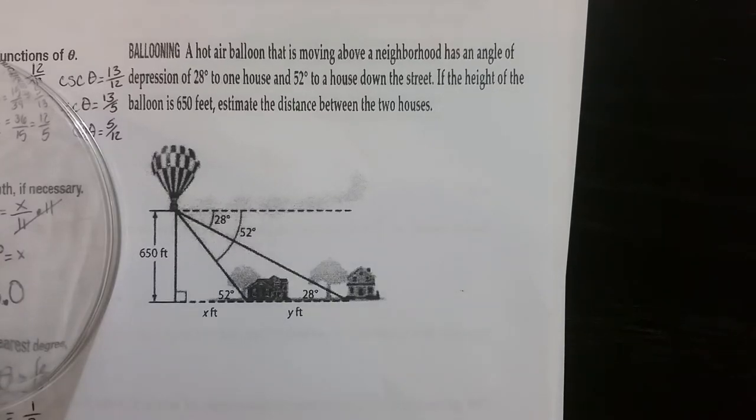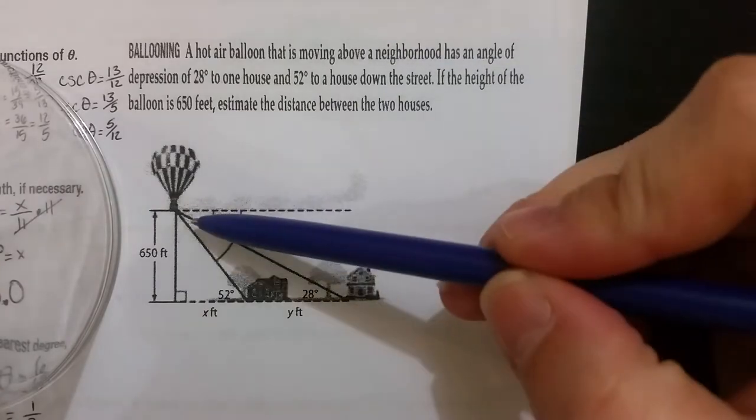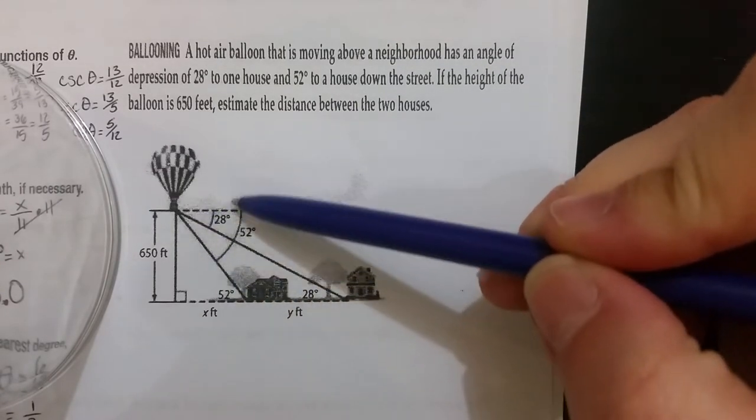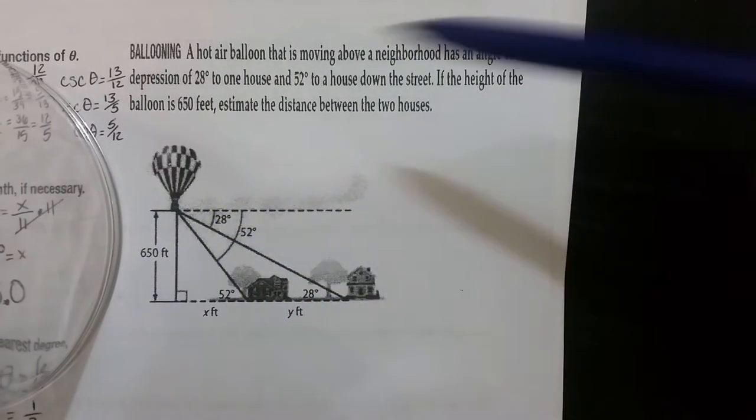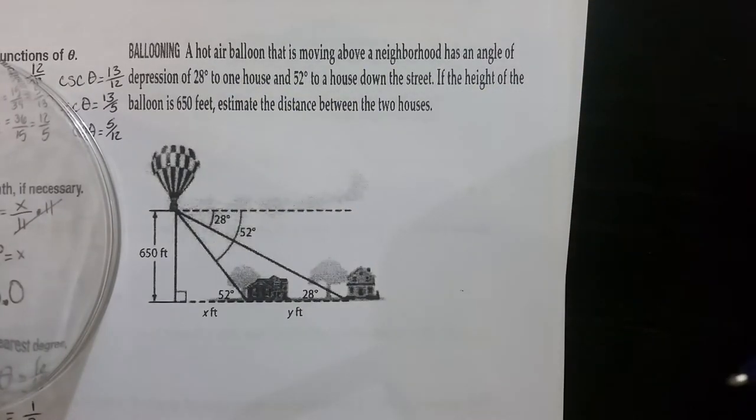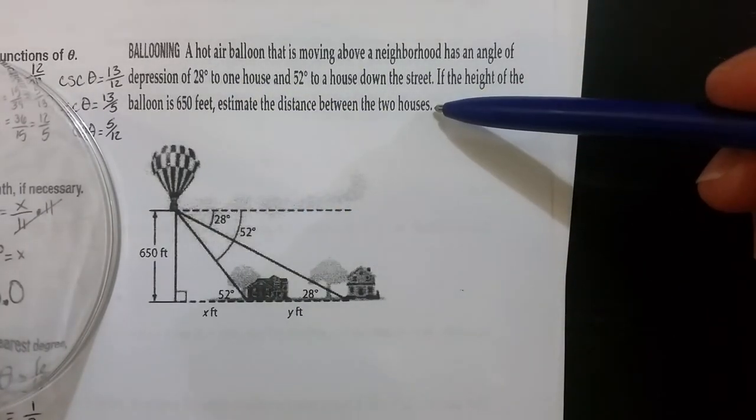A hot air balloon that is moving above a neighborhood has an angle of depression of 28 degrees to one house and 52 degrees to a house down the street. If the height of the balloon is 650 feet, estimate the distance between the two houses.